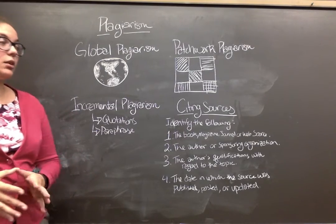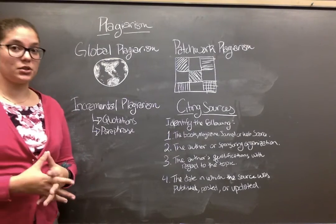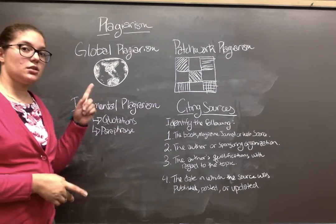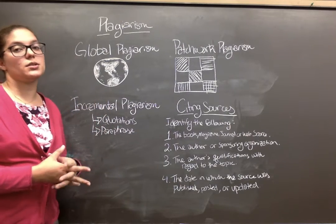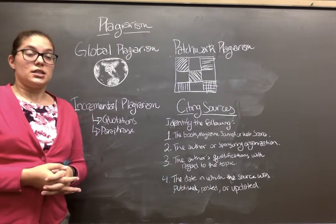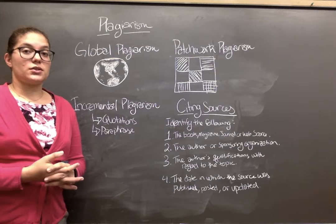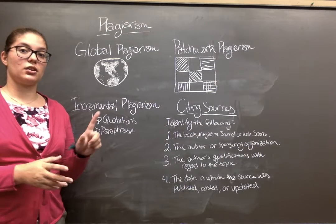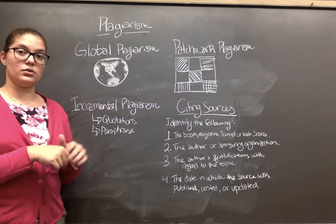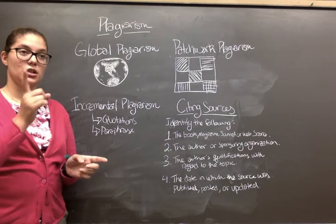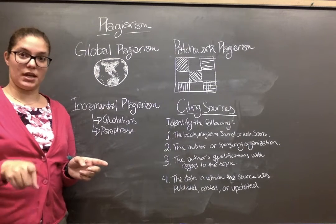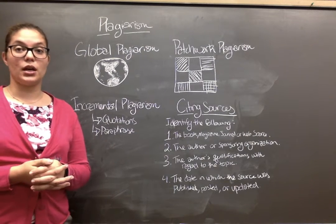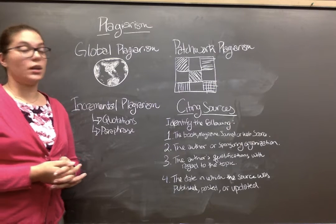So there are three main types of plagiarism. The first type is global plagiarism. This is where you have taken somebody else's speech, hit control-all to highlight the whole speech, copy and paste it into your speech, and try to pass it off as your own. Don't do that.